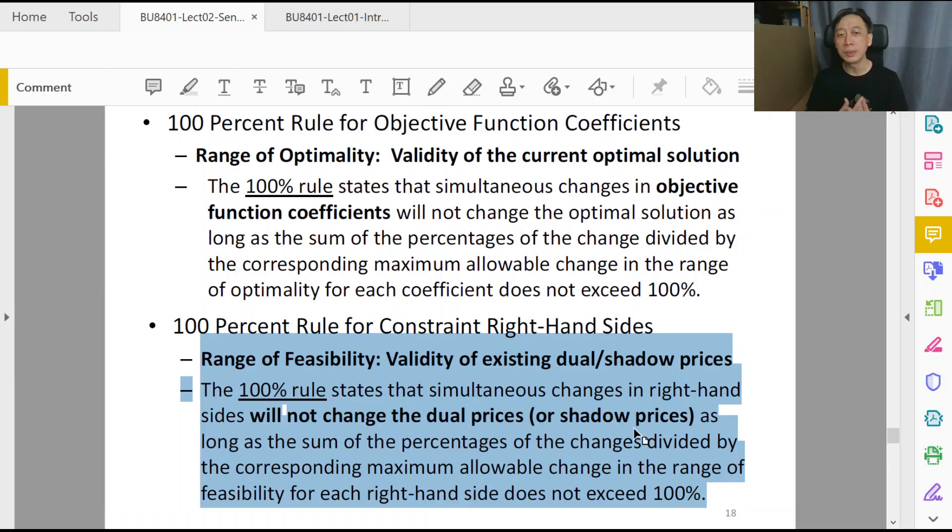When we have situations in which we have two or more simultaneous changes to the coefficients or two or more simultaneous changes to the right-hand sides, then what we need to do is first run the 100% rule check. This checks that the total percentage of impact, the total percentage of change induced by the various multiple changes, is less than 100%. If this rule is passed, the guarantees still hold. The guarantee for the range of optimality is that the optimal solution will not change. So we conclude that since the total adds up to less than 100%, these multiple changes to different coefficients will still result in no change in the optimal solution.